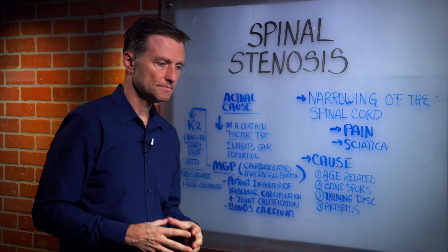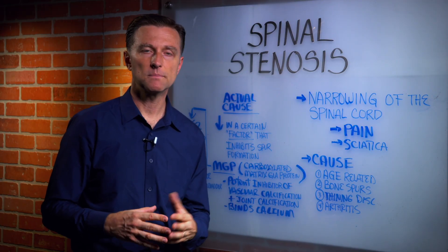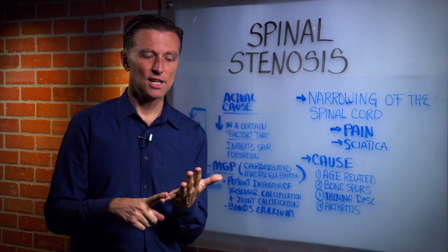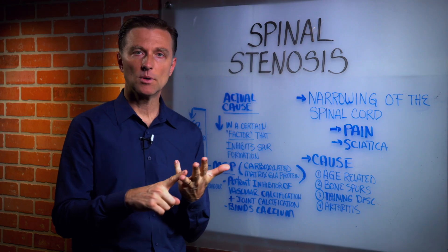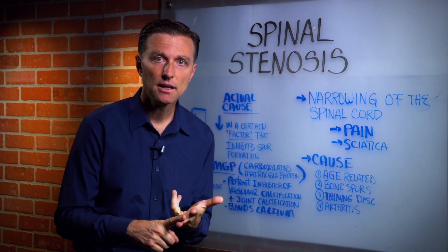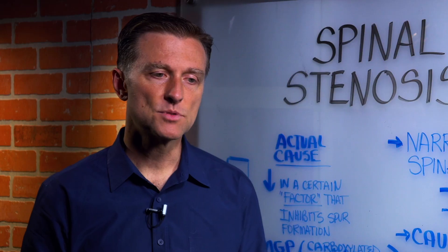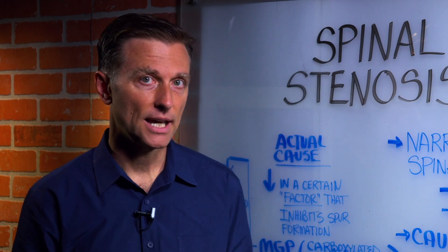Vitamin K2 is usually deficient in the diet because many people do not consume grass-fed products — it's really only in grass-fed animal products. It's in grass-fed dairy, grass-fed meats, and egg yolks from chickens that are pasture-raised, not grain-fed. Any animal products fed grains won't have a lot of vitamin K2, so you definitely want to do the grass-fed.